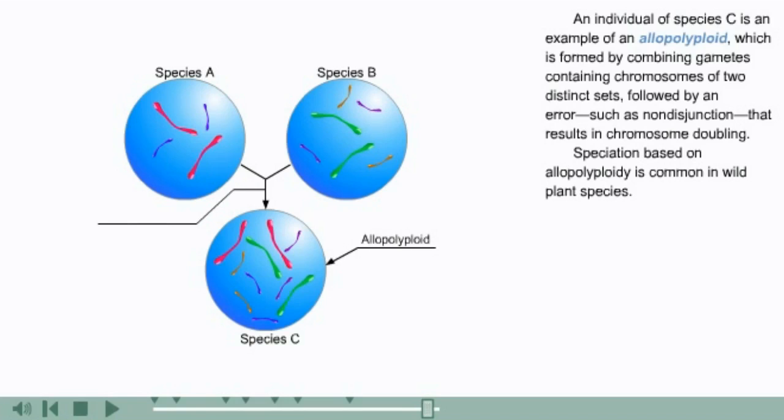An individual of species C is an example of an allopolyploid, which is formed by combining gametes containing chromosomes of two distinct sets, followed by an error such as non-disjunction that results in chromosome doubling.